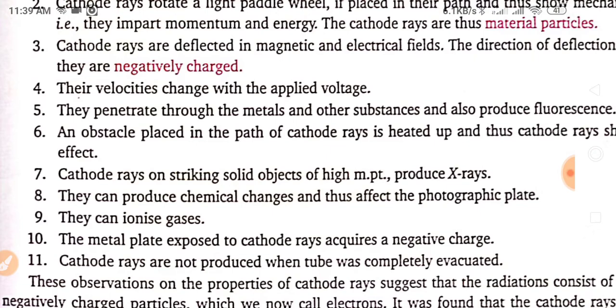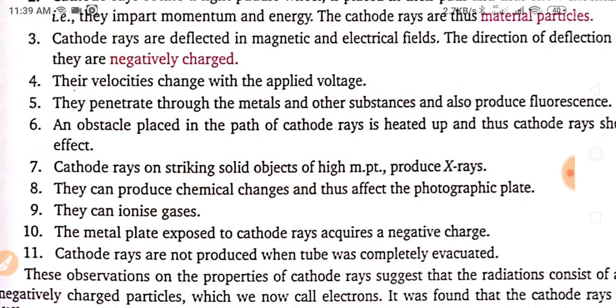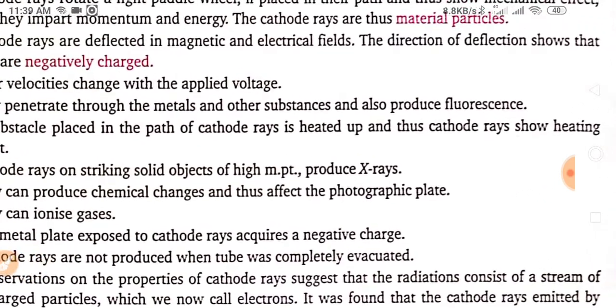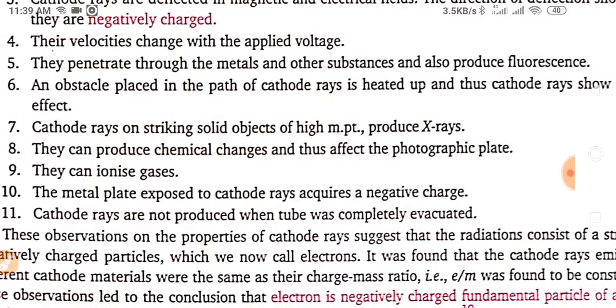Their velocities change with the applied voltage and they penetrate through the metals and other substances and also produce fluorescence. Fluorescence means they evolved out some light. An obstacle placed in the path of cathode rays is heated up and thus cathode rays show heating effect.